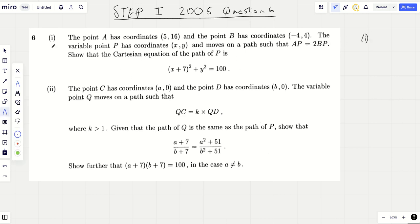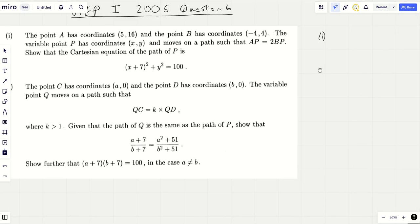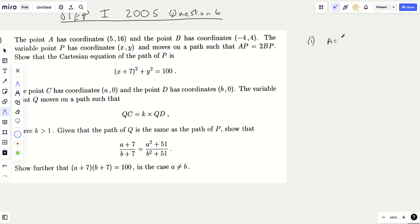Let's have a look at part 1. So we're told A has coordinates (5,16) and B has coordinates (-4,4). Well, that seems quite straightforward. And we're going to define the point P such that P moves on a path so that AP equals 2BP. They're clearly talking about the length of AP is double the length of BP here, and we've got to find the Cartesian equation.